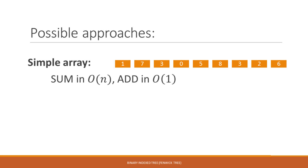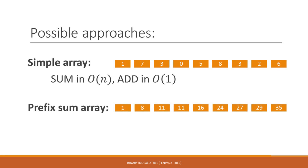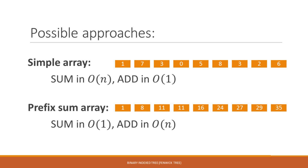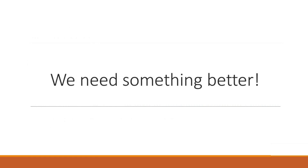Now if we want to compute a lot of prefixes, we can use a prefix sum array. We store all the prefixes in the array, so computing a prefix is instant — we only have to look up the element. The bad thing now is that if we want to add a value, we have to change a bunch of numbers. In the worst case, if we change the first element in the original array, we have to update all the numbers. So sum is really fast, but add is really slow. We need something better.